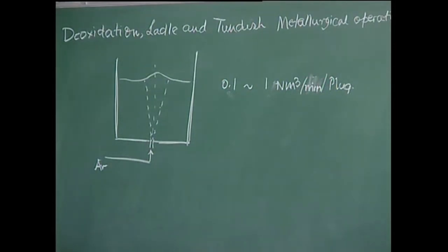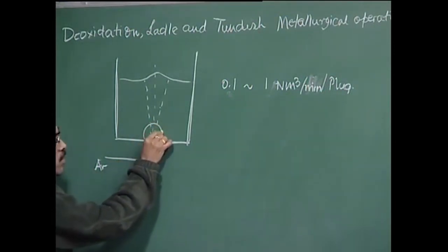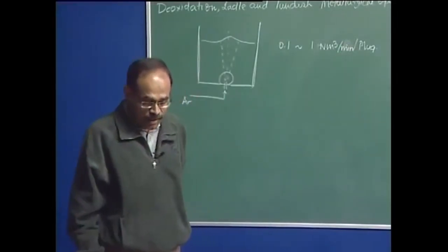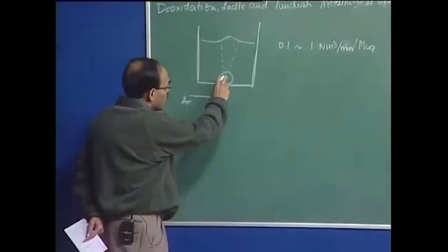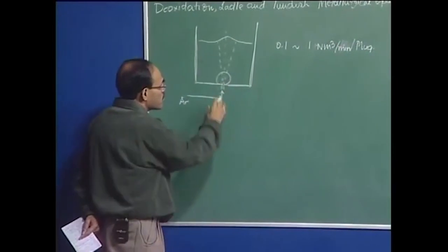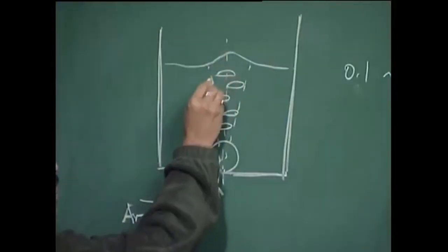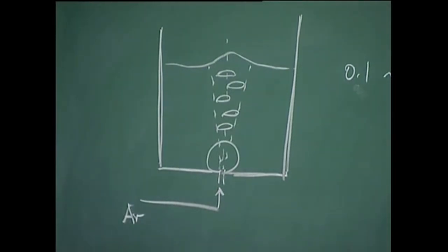Under the ladle metallurgy gas injection operation, when we inject argon gas through a nozzle, typically a big gas envelope forms in the vicinity of the nozzle. This gas envelope is typically hydrodynamically unstable — the fluid cannot really sustain that big a gas envelope. So, immediately above the gas injection nozzle, this big gas envelope typically devolves into a spectrum of spherical cap bubbles, which then rise due to their buoyancy and escape to the surrounding.